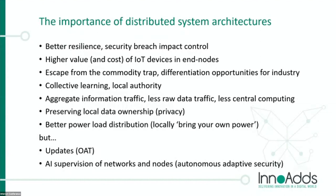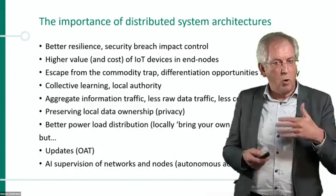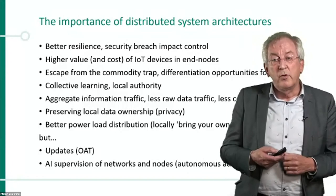Of course there is a higher cost for distributed systems, but it gets so much more value that this is really compensated. Companies can escape from the commodity trap. In these systems you have collective learning but local authority. You don't need to send all raw data to central points — you can locally process data and send only the outcome, saving traffic and power. You can create much more local ownership of data, better protecting privacy. We also need to ensure updates for all nodes and supervision of those networks — what is called autonomous adaptive security — and AI will help very much in that sense.